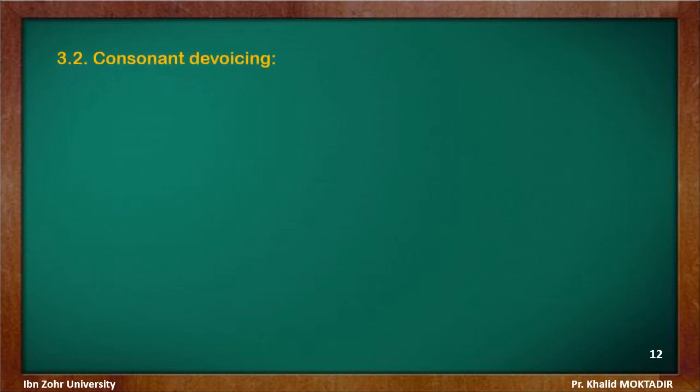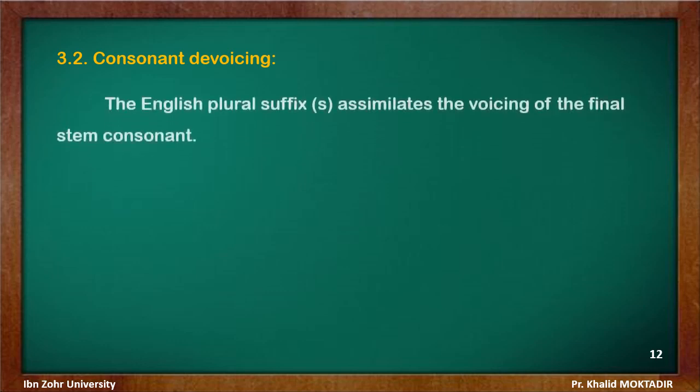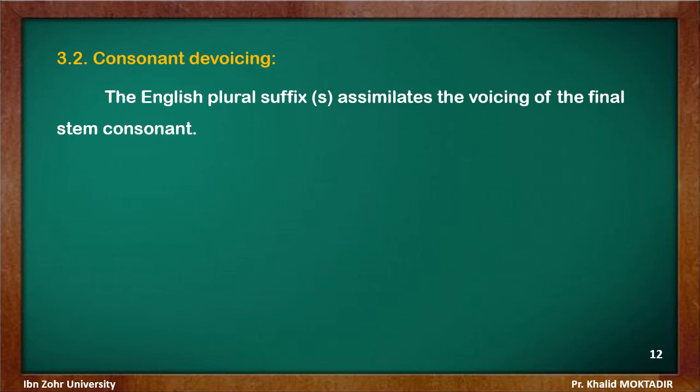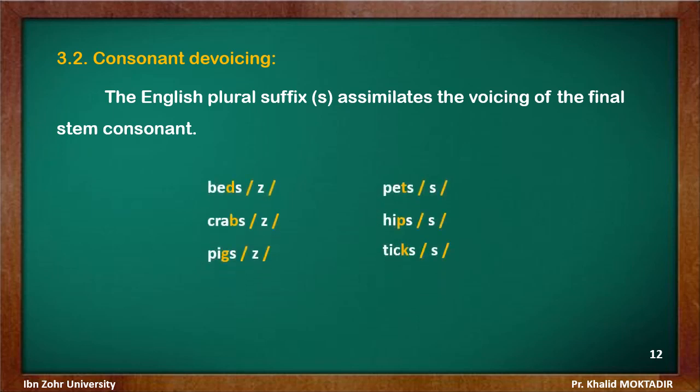We consider another process where a consonant assimilates another consonant's feature. The English plural suffix S assimilates the voicing of the final stem consonant: the plural S is pronounced [z] after voiced stops and [s] after voiceless stops. In other words, it assimilates the voicing of the final consonant in the word.